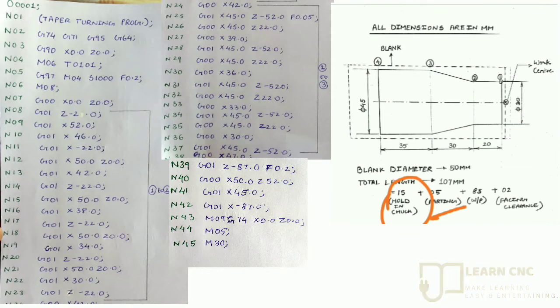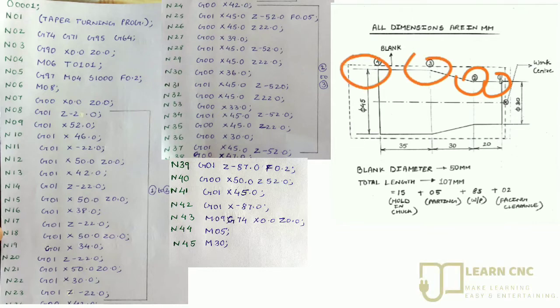But the extra 15mm is kept for holding the workpiece in the chuck, and 5mm for parting purpose at the last, and 2mm is kept for the facing clearance. So we have numbered the workpiece 1, 2, 3, and 4, and accordingly we will proceed further for programming.